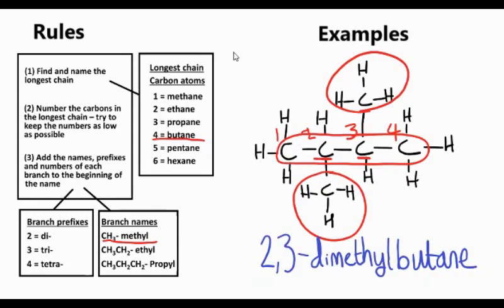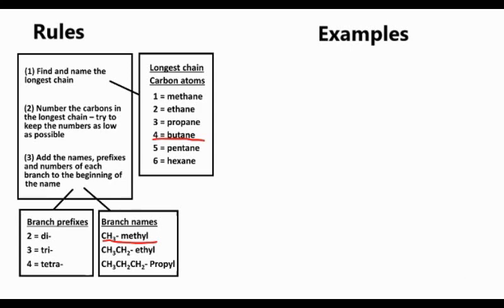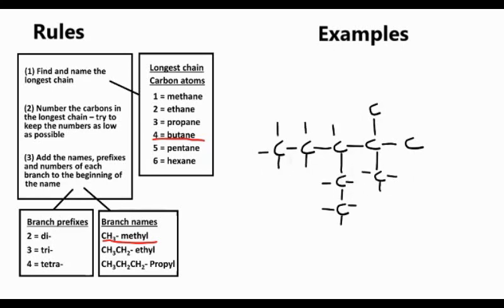So let's try an even more tricky example. When you look at big examples that look quite scary, don't get put off. Just follow the rules. If you follow the rules, you'll always get to the right name. And the important thing with following these rules is just to be consistent. So we've now got three different branches coming off our chain. Pop the hydrogens in.